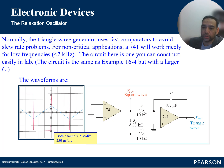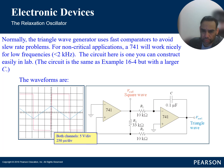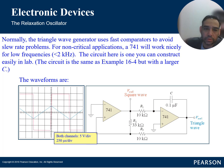Frequency control is based on the RC values. Some implementations add a buffer amplifier at the output of the triangle wave generator to isolate it from the load and ensure a stable output. The triangle wave generator is simple in design, which generally means low cost and good stability. Common applications include audio signals, frequency modulation, and waveform synthesis.